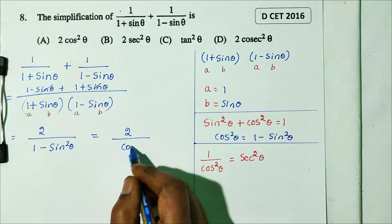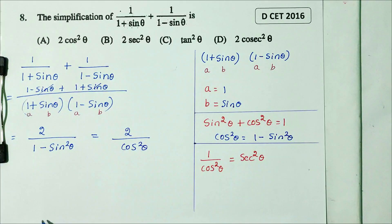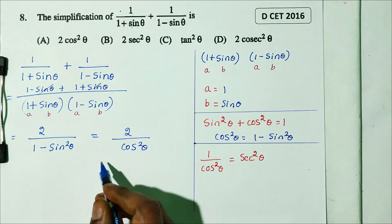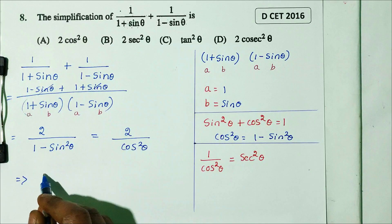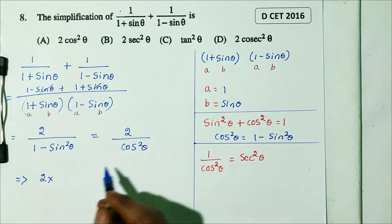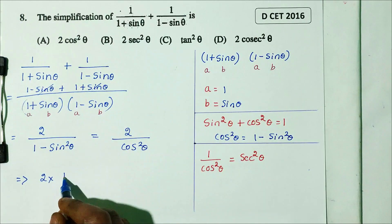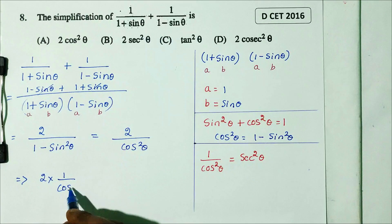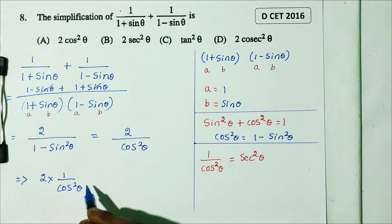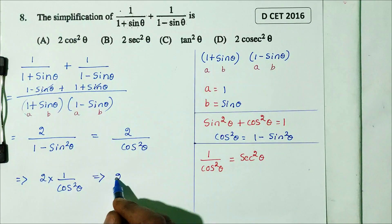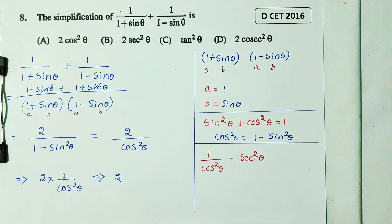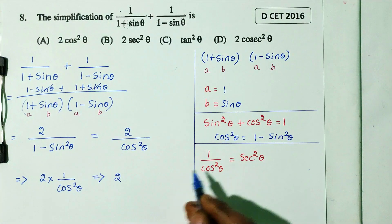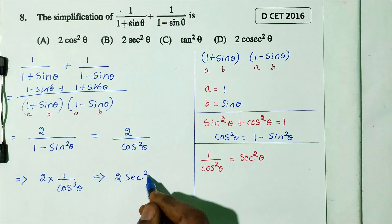So the denominator becomes 1 squared minus sin squared theta, which equals 1 minus sin squared theta. Using the trigonometric identity sin squared theta plus cos squared theta equals 1, we get 1 minus sin squared theta equals cos squared theta.